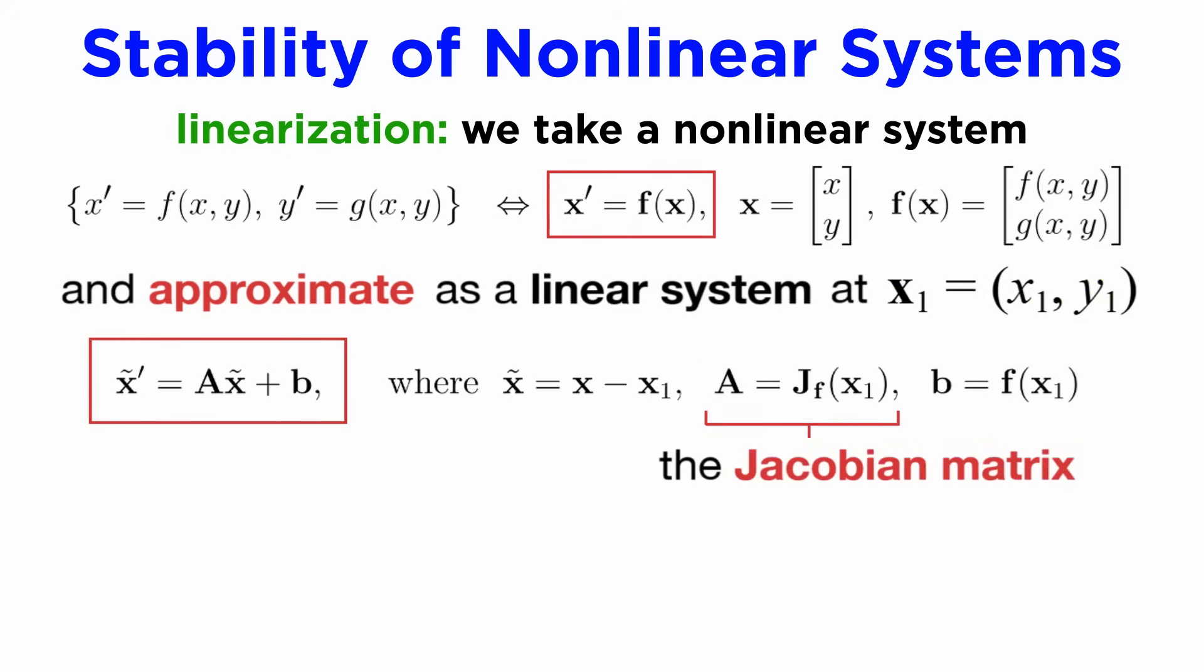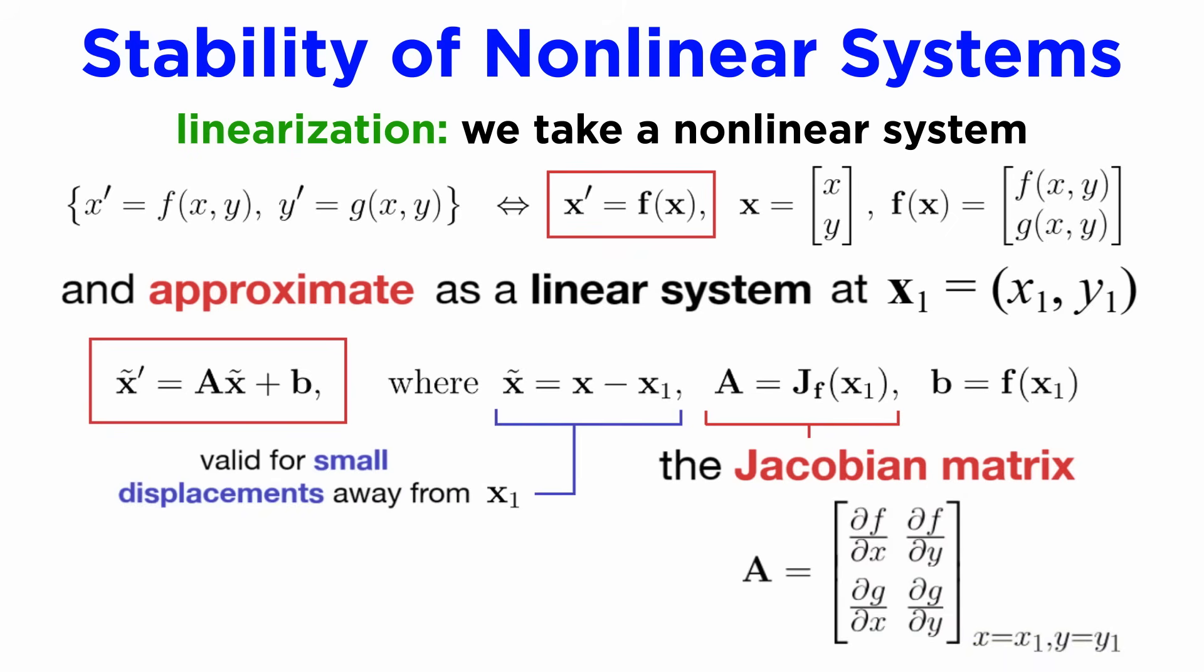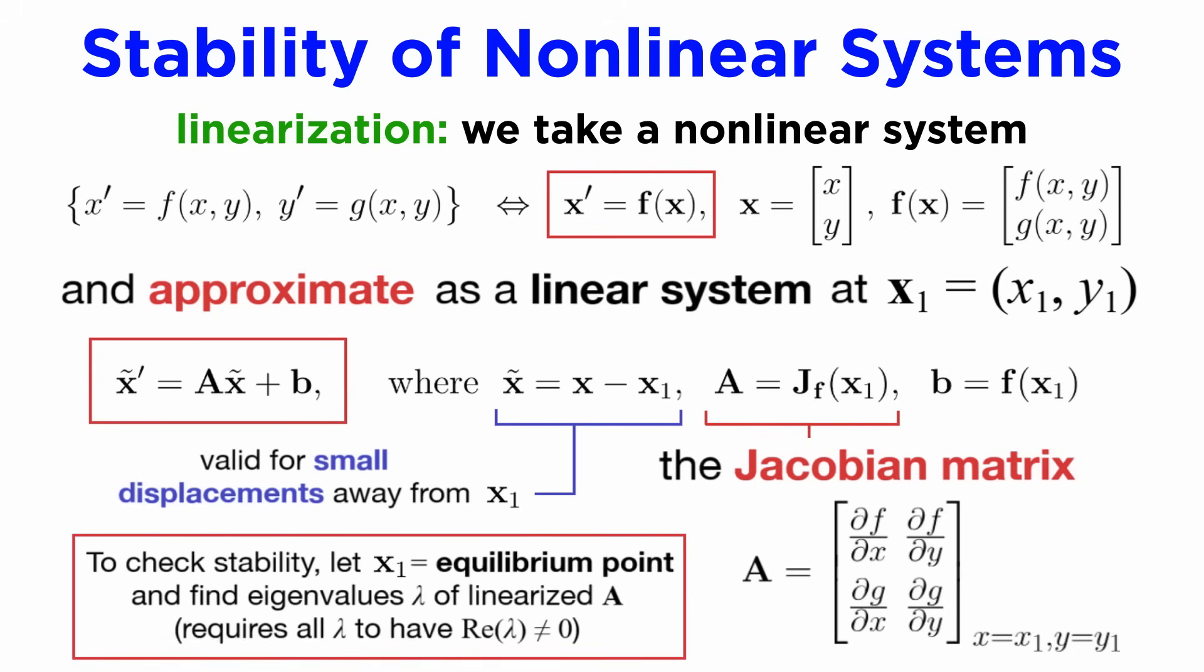The Jacobian is defined as a matrix of all the partial derivatives of our nonlinear functions, f and g, evaluated at the point x1y1. This matrix can then be used in place of our nonlinear system for small deviations away from the point x1y1, and we can proceed to assess stability using the eigenvalue theory that we mentioned earlier.